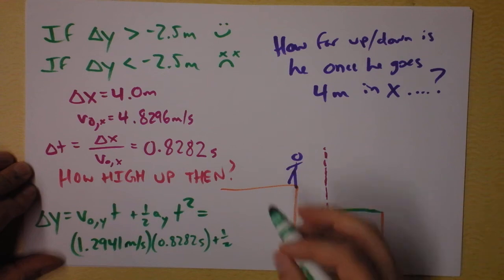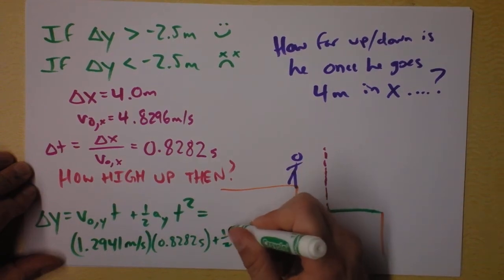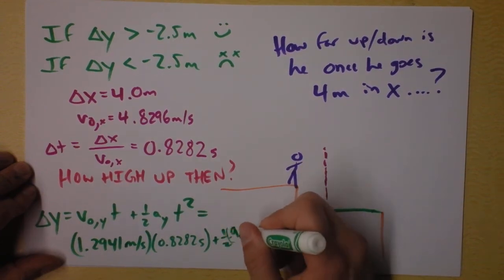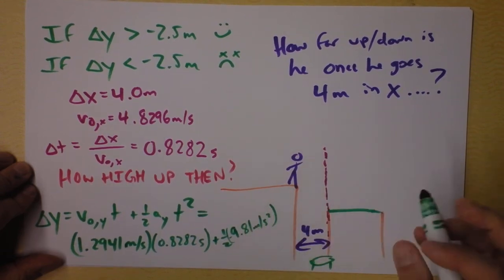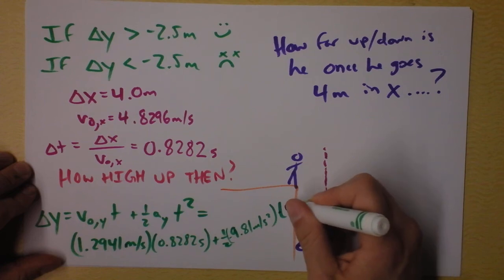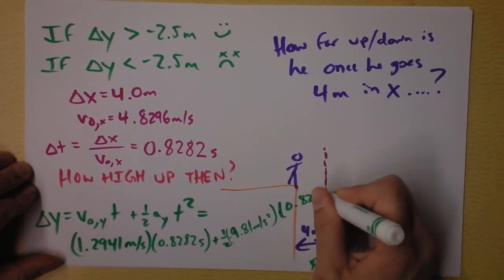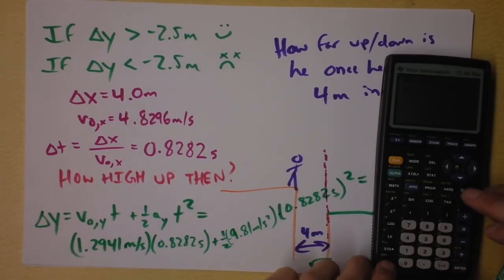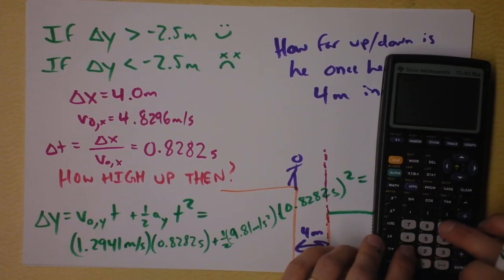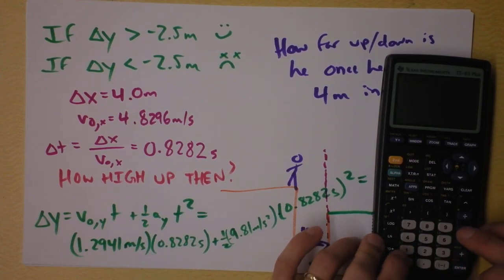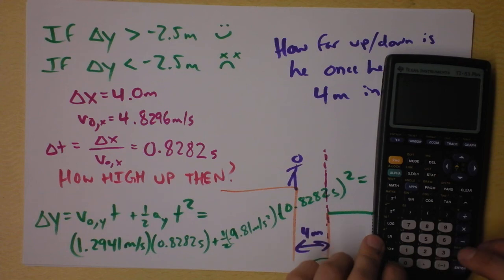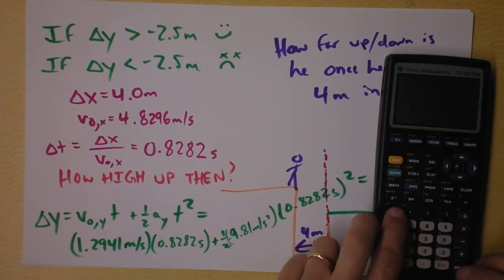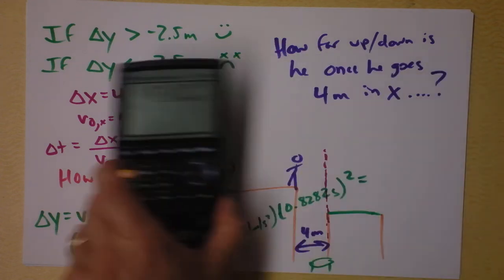Plus one half, I'm going to need more room, acceleration in the y direction is negative 9.81 meters per second squared, multiplied by that time. Here we go. Multiplying by the time squared, 0.8282 seconds squared. If I type this into my calculator, I will find out how high up he is. This is a life or death question. 1.2941 times 0.8282 plus 0.5 times negative 9.81 times 0.8282 squared equals it's negative 2.3. What does that mean?